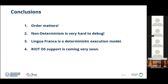Conclusions: order matters really much — it's very safety critical. Non-determinism is a big struggle, and I would guess many programs behave non-deterministically with problems that just haven't surfaced yet. Rust does compile checks to ensure mutual exclusion, but this ordering problem is something Rust didn't solve. Lingua Franca solves this ordering problem by forcibly sequentializing things. RiotOS Lingua Franca support is coming very soon.